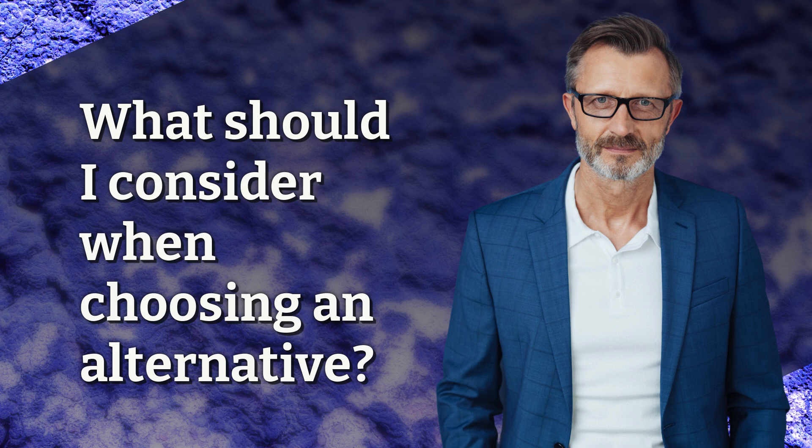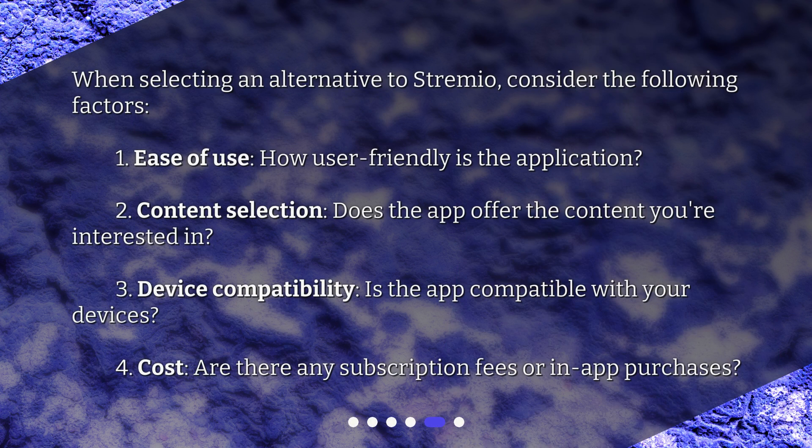What should I consider when choosing an alternative? When selecting an alternative to Streamio, consider the following factors: 1. Ease of use — how user-friendly is the application? 2. Content selection — does the app offer the content you're interested in? 3. Device compatibility — is the app compatible with your devices? 4. Cost — are there any subscription fees or in-app purchases?